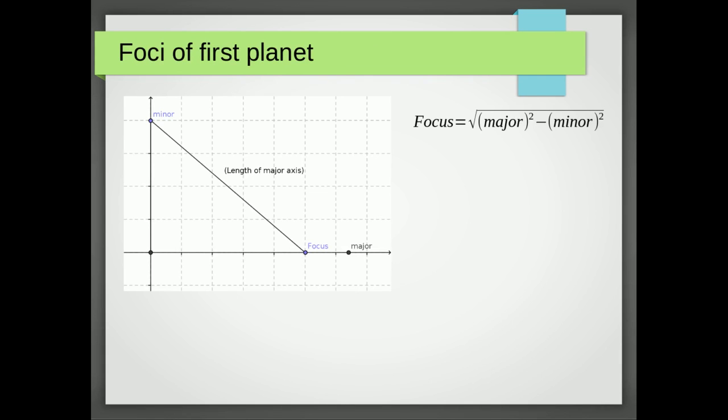Okay, so now we want to find the foci of that first planet because we're going to need that to find the equation of the second planet. This equation here can be verified: the focus is equal to √(a² - b²). In our case, that's going to be √(13² - 25²) = √(169 - 25) = √144 = 12. Remember, we've got two of them, so they're going to have the coordinates (12, 0) and (-12, 0).